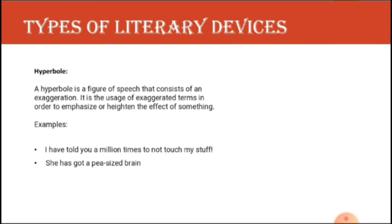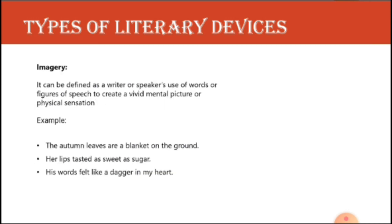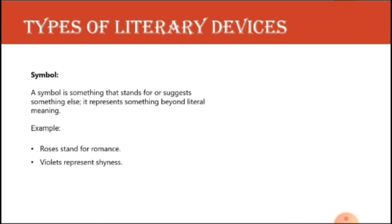The next one is imagery. When we read certain lines, we create an image in our mind. Imagery can be defined as the writer's or speaker's use of words or figures of speech to create a vivid mental image. For example, 'the autumn leaves are a blanket on the ground' — when autumn arrives, leaves fall and spread on the floor, and one can imagine this image in the mind.